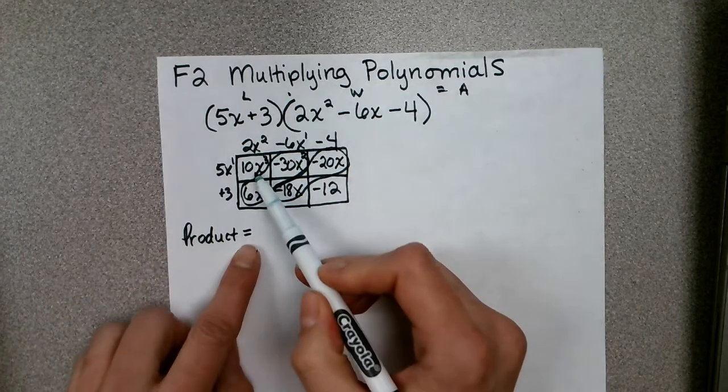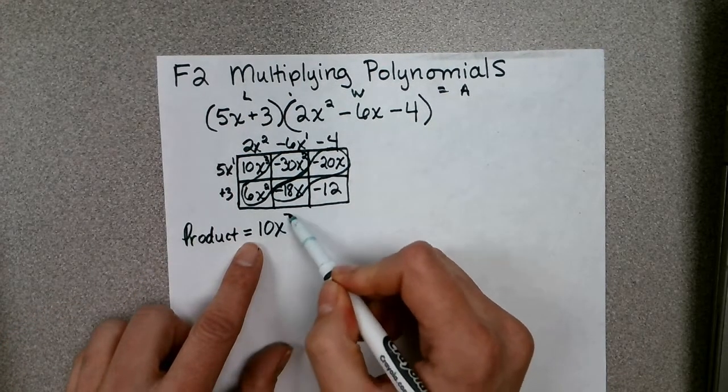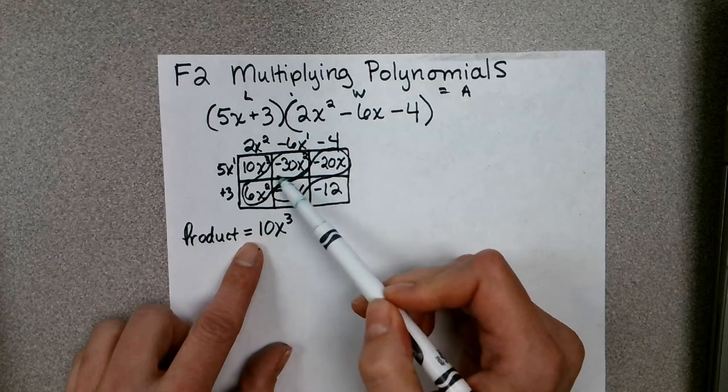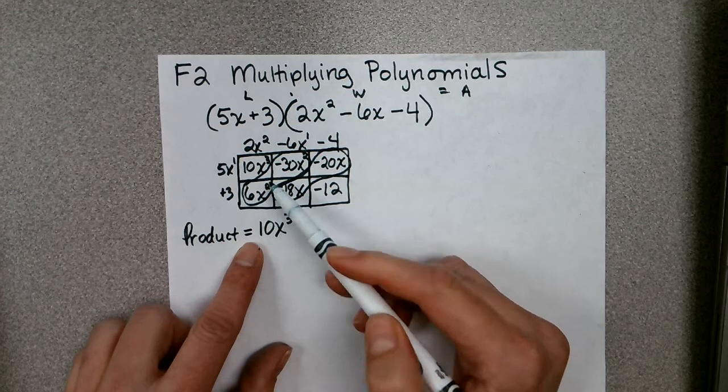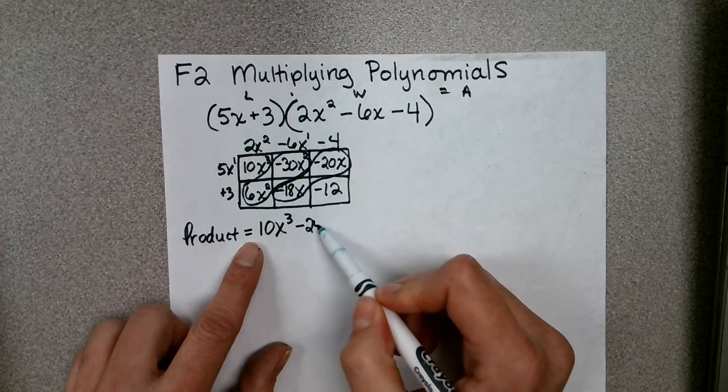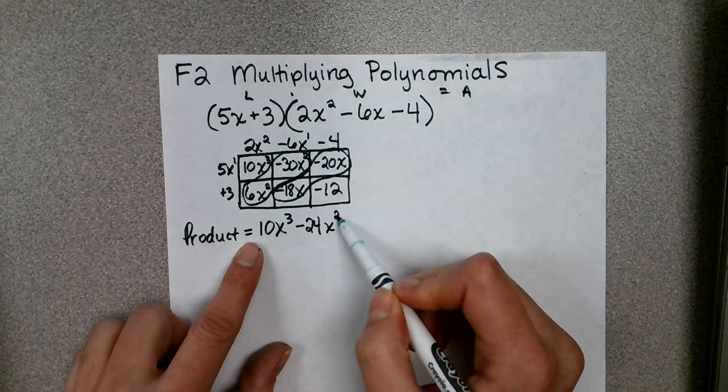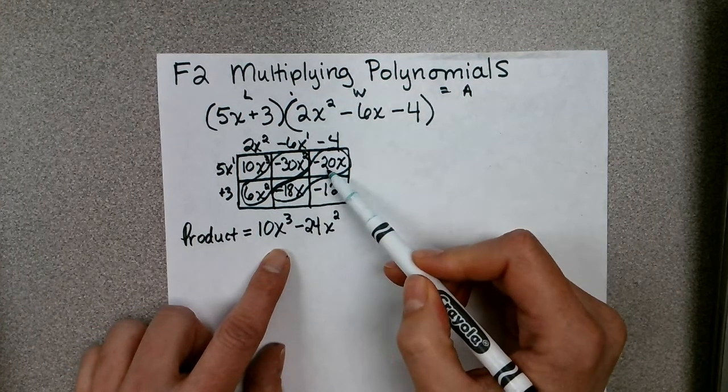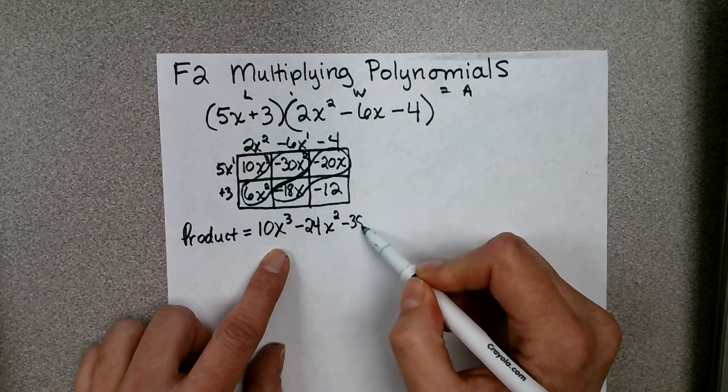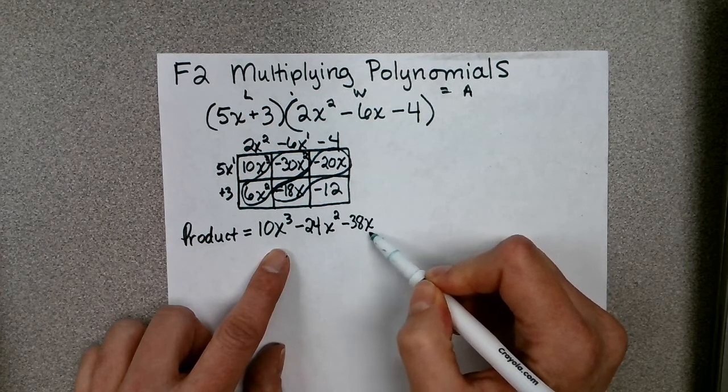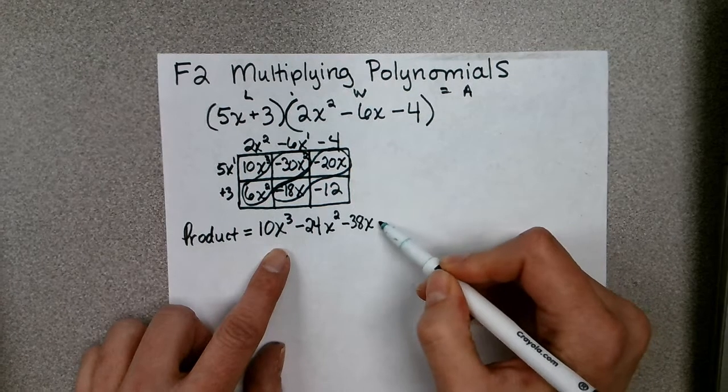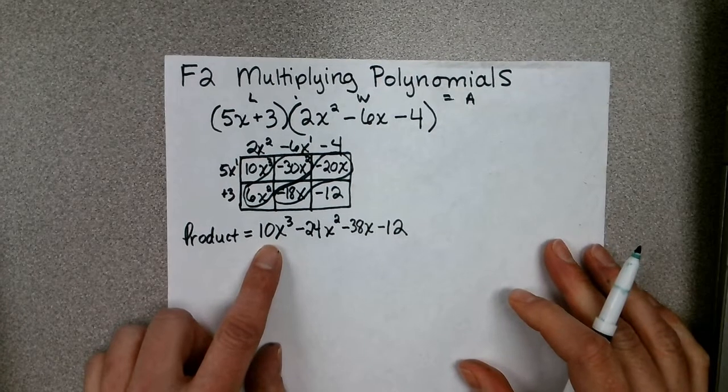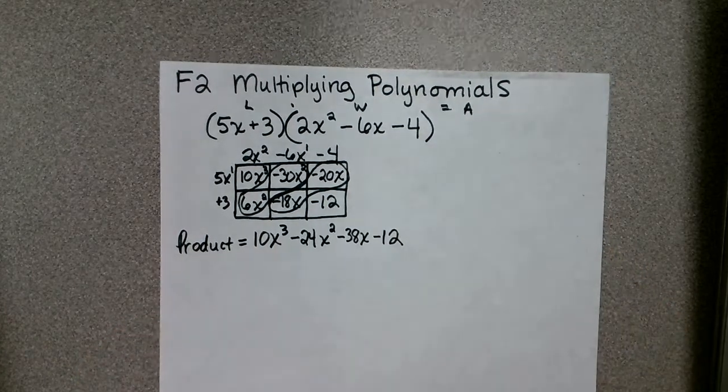So our final product or area would equal, if we start with the highest powered term, it would be 10x to the power of 3. Then we have negative 30 plus 6, that would give us negative 24x squared. Then we have negative 18 and negative 20, that would be negative 38x. And then finally our constant is negative 12.